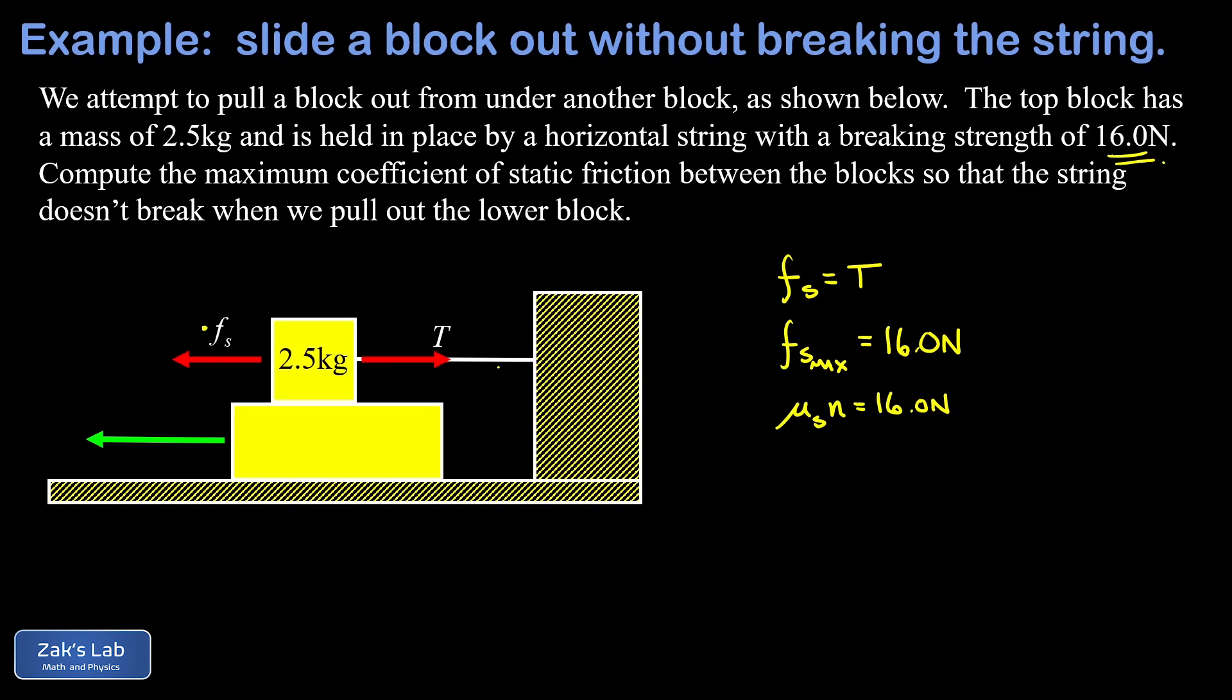We need to find the normal force on this block, and for that we have to put our vertical vectors into the diagram. There's the force of gravity pulling down with a magnitude of mg, and there's the normal force pushing up on this block to balance the vertical forces. There's nothing else tampering with the vertical direction, and we can immediately tell the normal force is given by mg. We'll go ahead and calculate this thing right